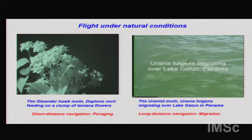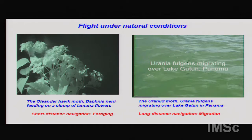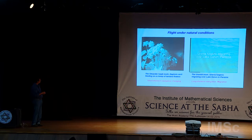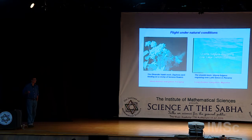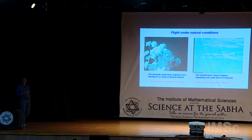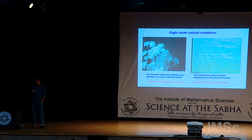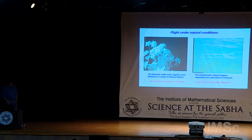Here's one insect that we study: an oleander hawkmoth called Daphnus neri, feeding on a bunch of lantana flowers — you can even see it in Chennai. This one was shot in infrared because it operates under low light conditions, yet it is able to feed from these tiny flowers with its proboscis quite precisely. It is also very stable in flight under these low light levels, which is remarkable.